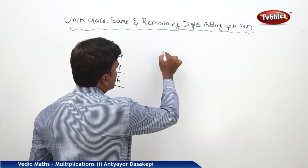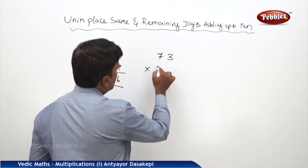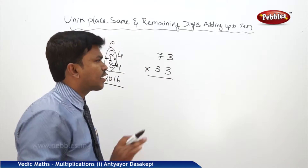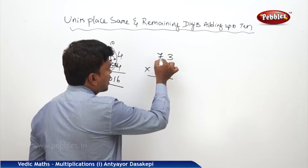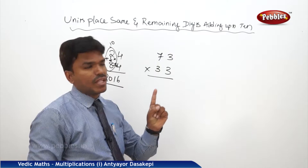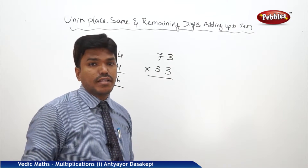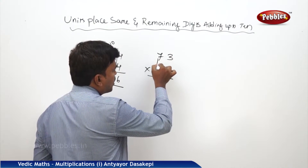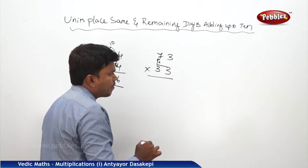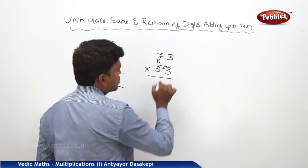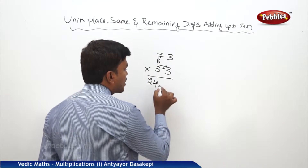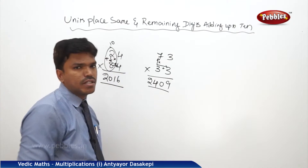One more example: 73 into 33. We can think of this as an L-shaped technique. Check: tens place 7 plus 3 equals 10 — yes. Units digits 3 and 3 — they are same. Both conditions apply. Multiply 7 into 3: 21, then add the units digit 3: 21 plus 3 is 24. Write 24 on the left side. Then multiply 3 into 3: 9, but write it as 09. So your answer is 2409.